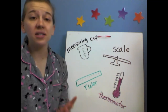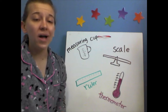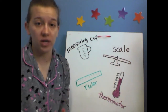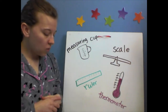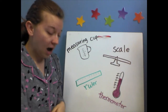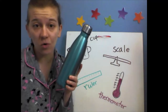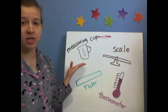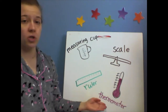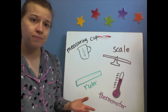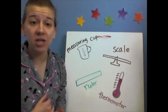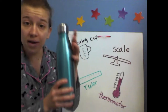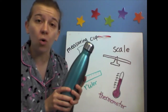Now I'm gonna ask some questions and we're gonna need to figure out what measuring tool we need to use to answer that question. Which measuring tool would you use to find out how much water a container holds? Would we use a measuring cup, a scale, a ruler, or a thermometer? A measuring cup, right? Because we use measuring cups for measuring liquid, and water is a liquid. So we would use a measuring cup to measure how much a container can hold.